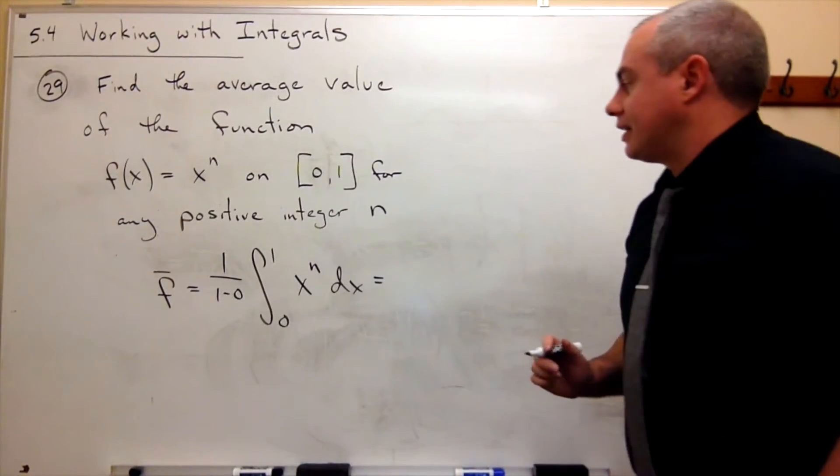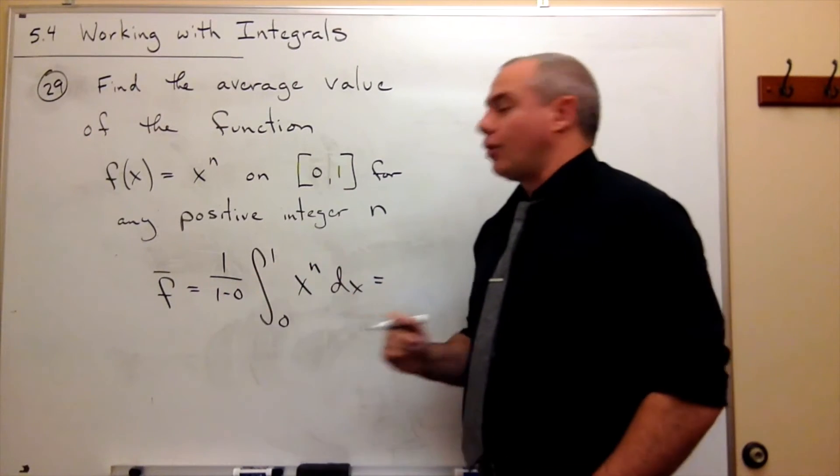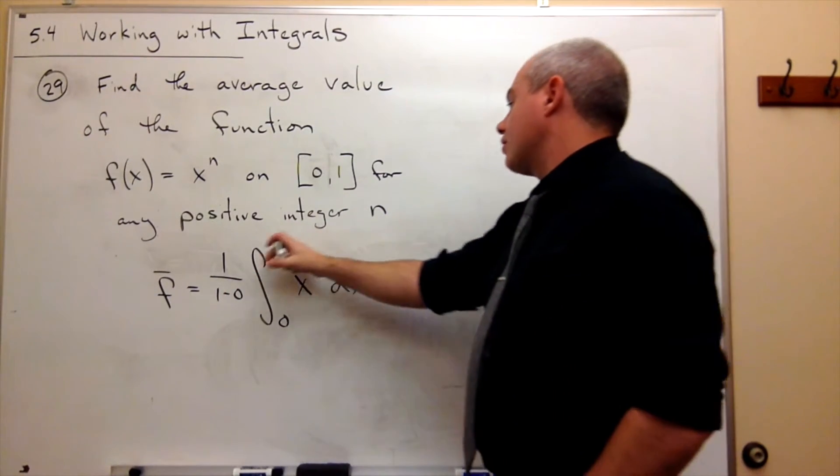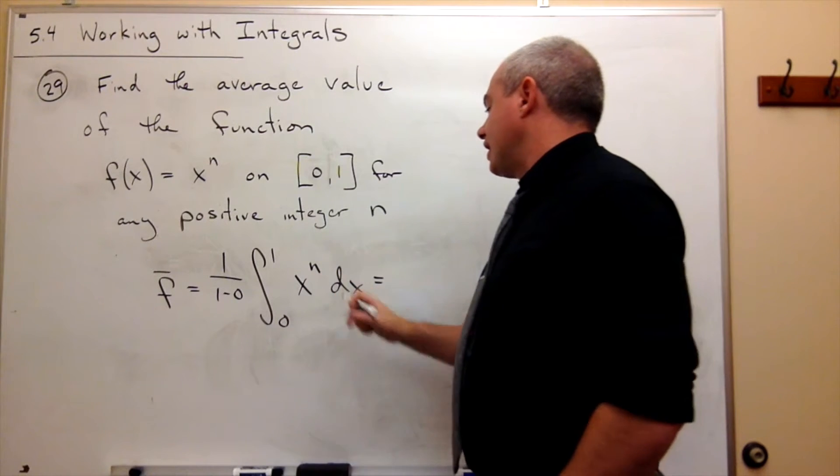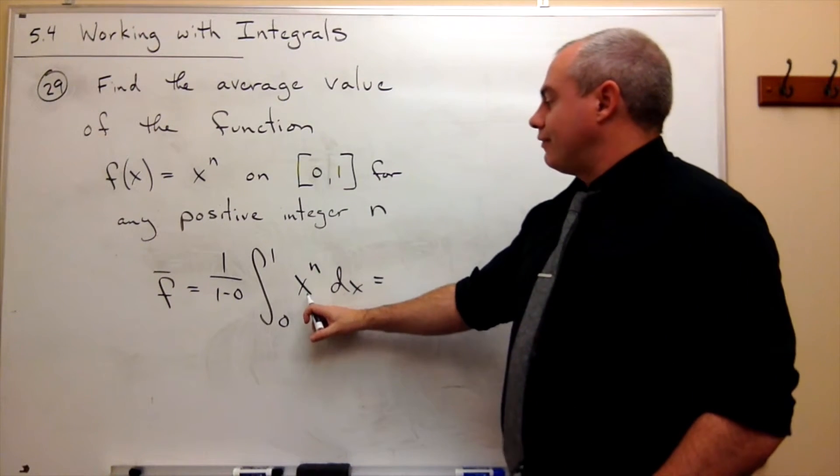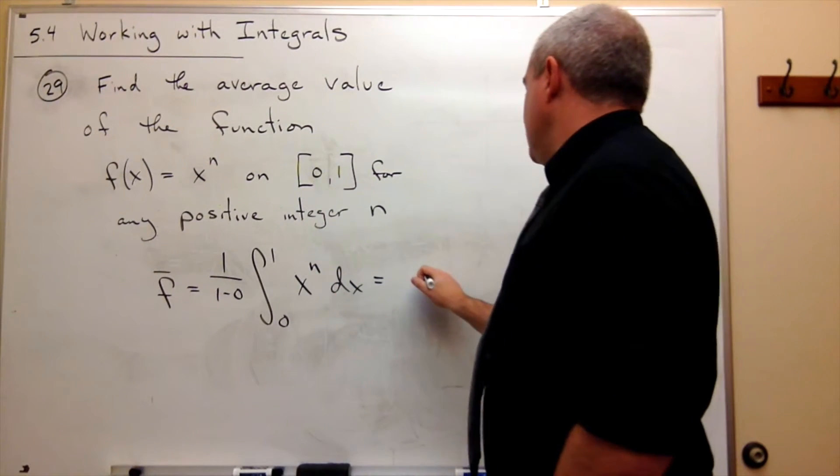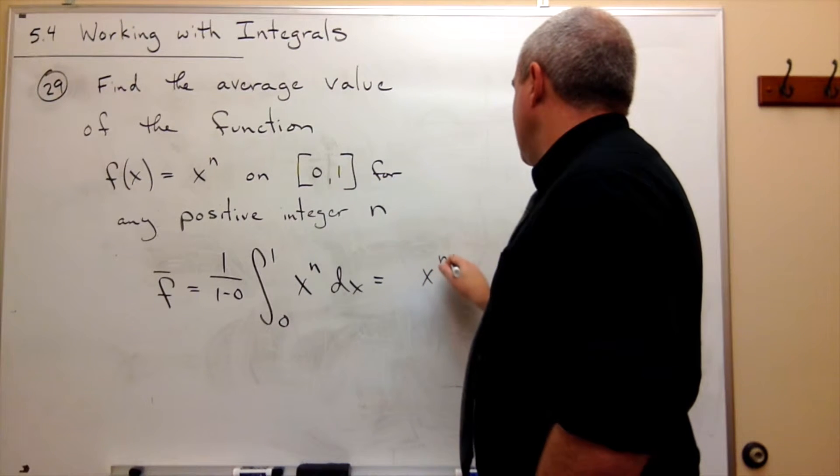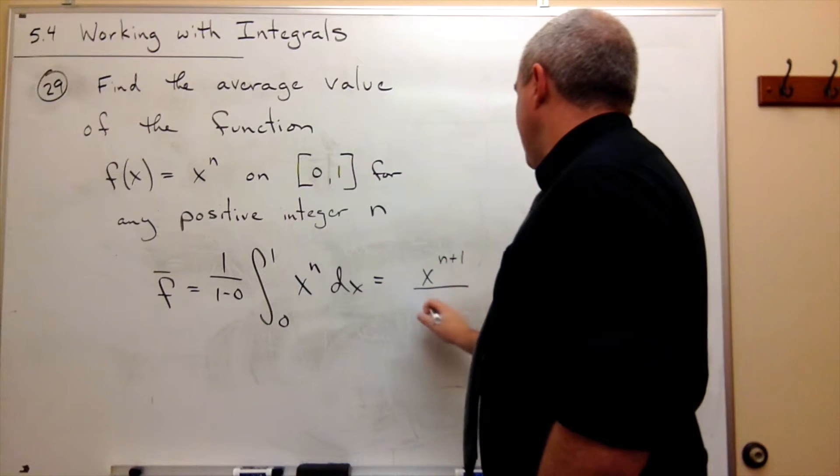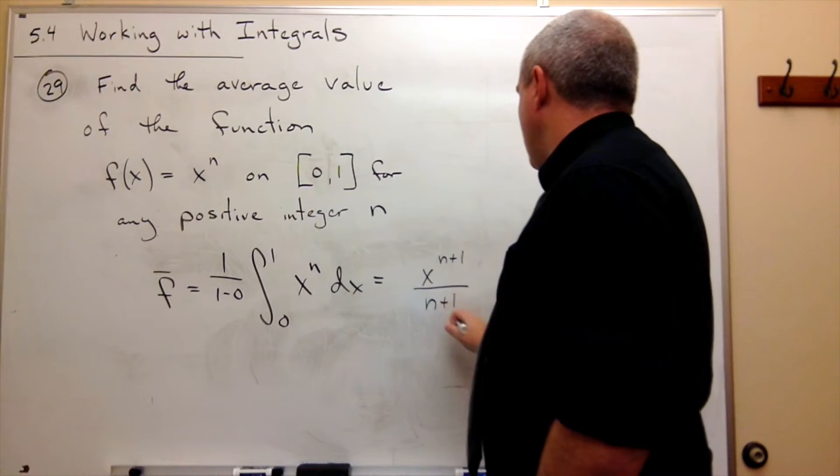So I get 1, I won't write it again, times the integral from 0 to 1 of x to the n dx. So the antiderivative of x to the n is x to the n plus 1 divided by n plus 1...